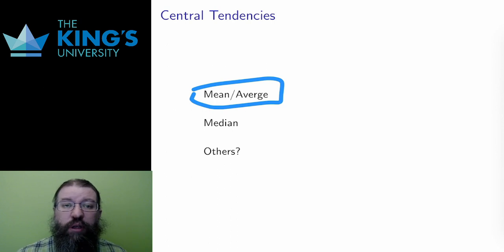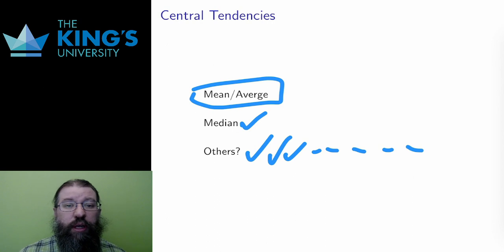However, the mean is not the only measure of what is typical. Another one you may have heard of is the median, and I'll define median for distributions later in this video. You may also have heard of mode, and there are mathematically infinitely many such measurements. The general term for these is central tendencies.